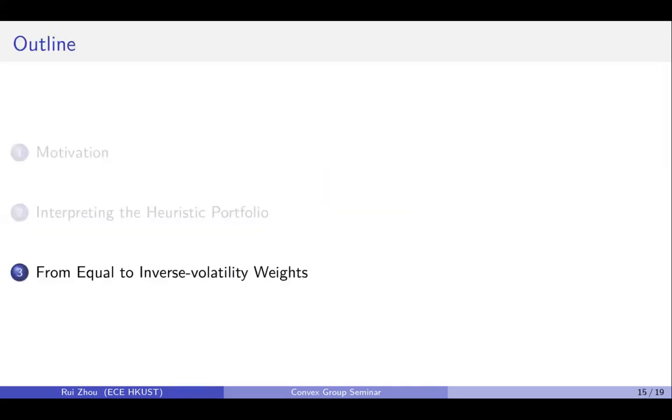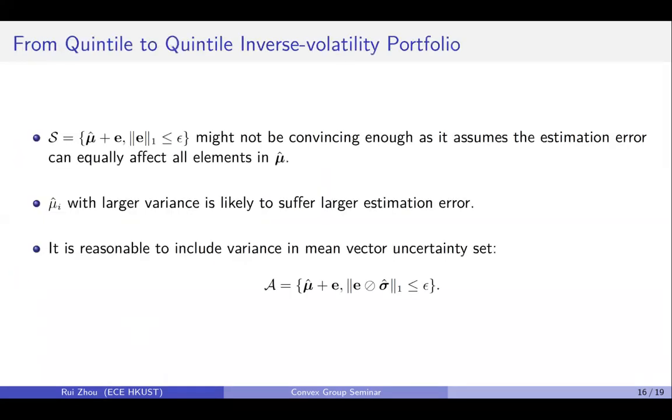Now let's look at another case. One might think that until now, the uncertainty set might not be very convincing because it assumes the estimation error can equally affect all the elements in the mu hat. However, intuitively, we tend to believe that the mu with large variance is likely to suffer from larger estimation error. So it seems reasonable to include variance in the mean vector uncertainty set.